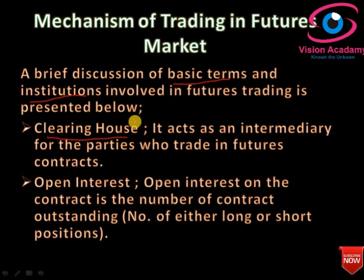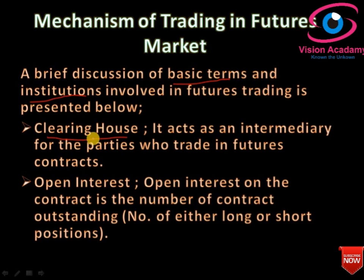The first institution is the clearinghouse. As mentioned in the earlier lecture on forward contracts, forward contracts are difficult to cancel or terminate because you need to find the person with whom you contracted. In the case of futures contracts it is different — if you want to sell a silver contract you can sell it on the spot, because there is a clearinghouse. It acts as an intermediary for the parties who trade in futures contracts: if you sell the contract it will buy, and if you buy the contract it will sell. Terminating a futures contract is therefore very easy. It is also known as a clearing corporation.